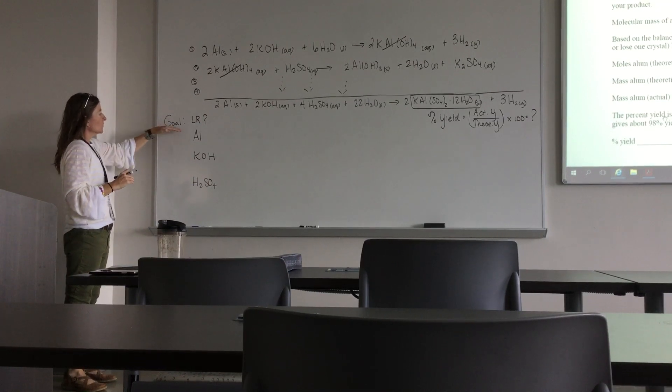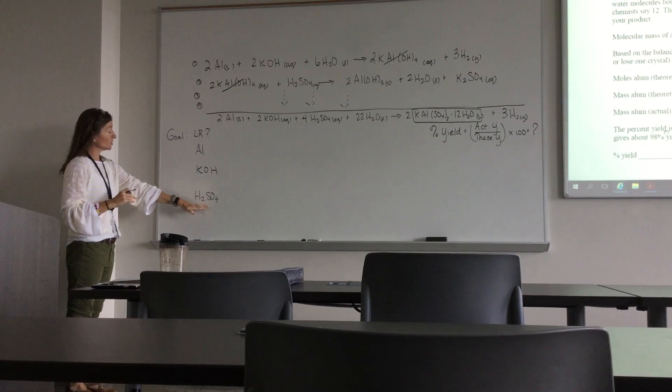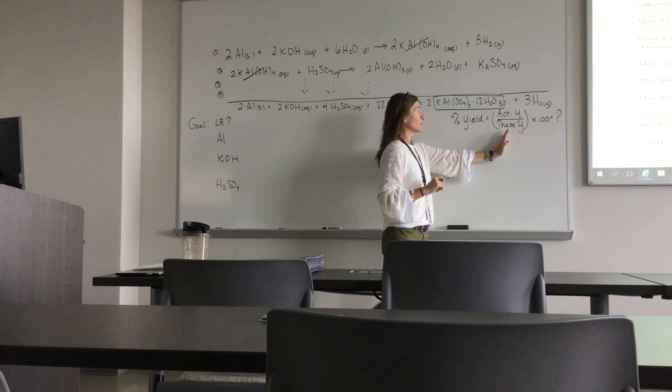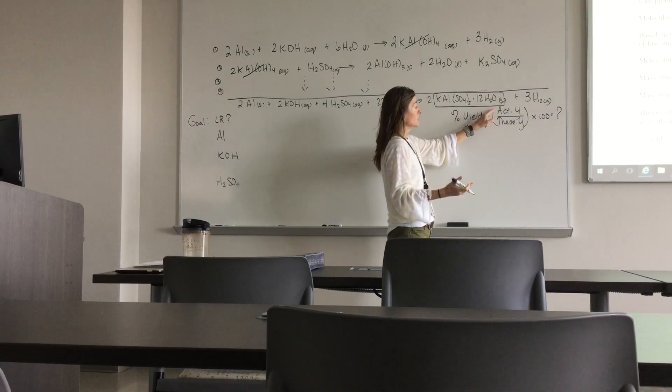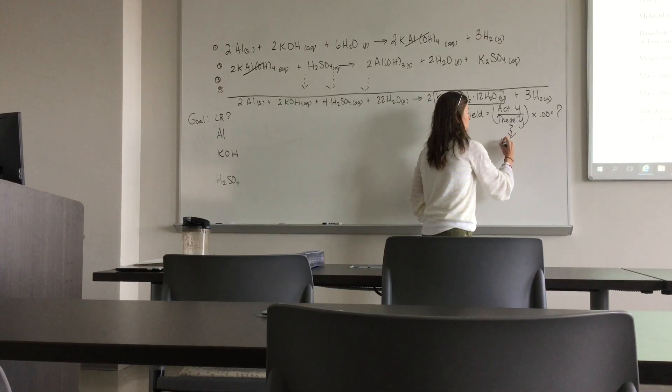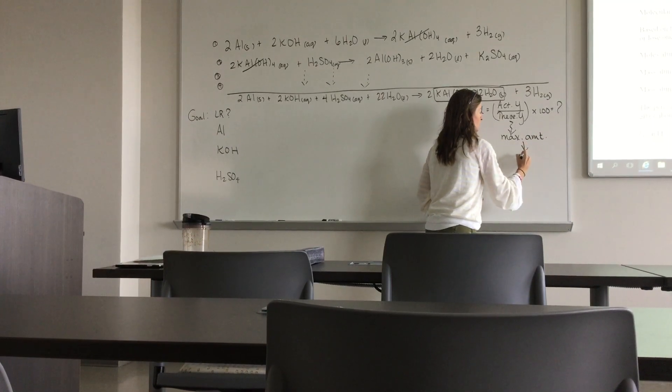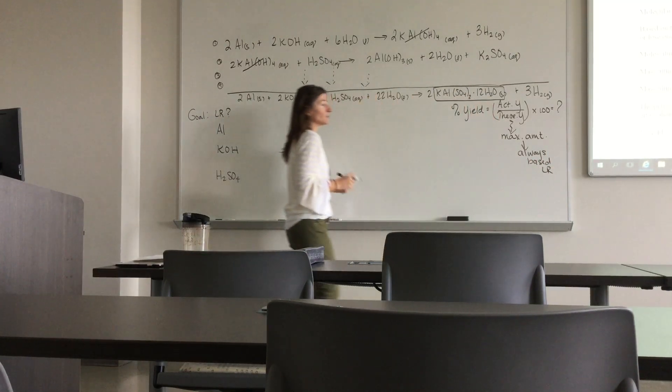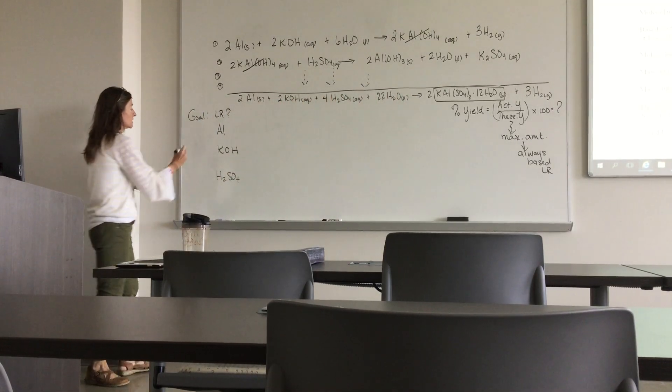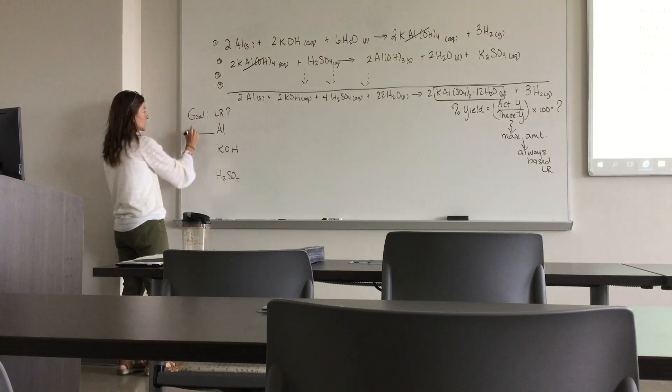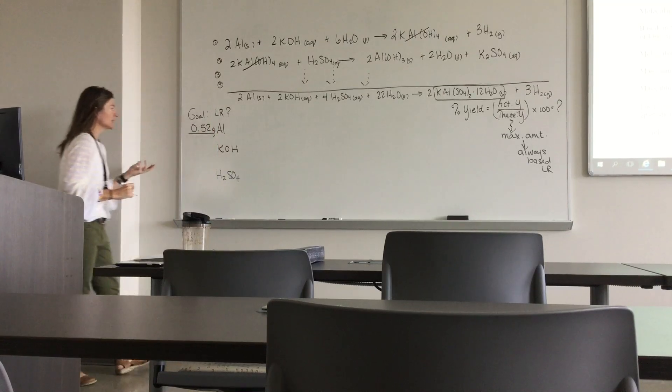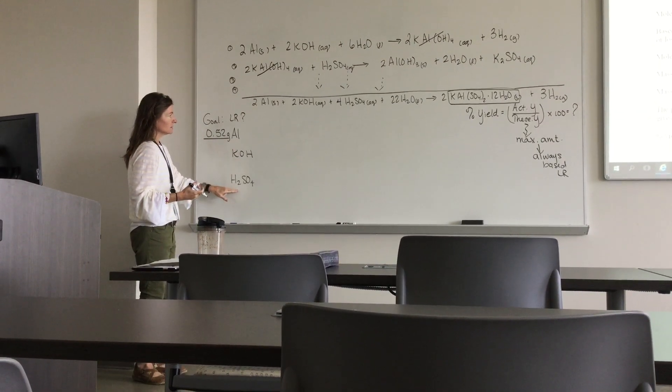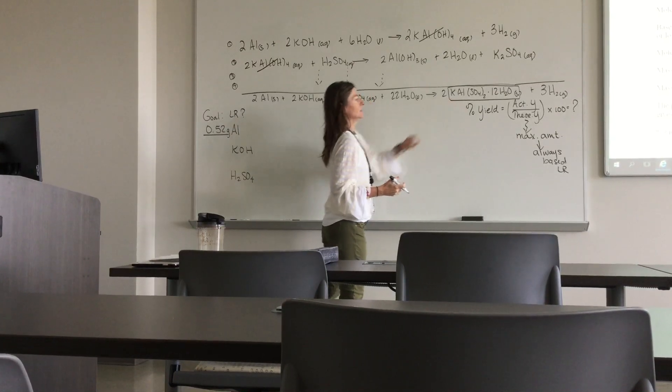Now the goal of this lab is twofold. First part is: which one of these—aluminum, potassium hydroxide, or sulfuric acid—is your limiting reactant? That's your goal. Then we're going to use that information to find our percent yield. Remember, actual yield is what you massed out in the experiment. Theoretical yield is the maximum amount that you could have produced, and that is always, always, always based on your limiting reactant.